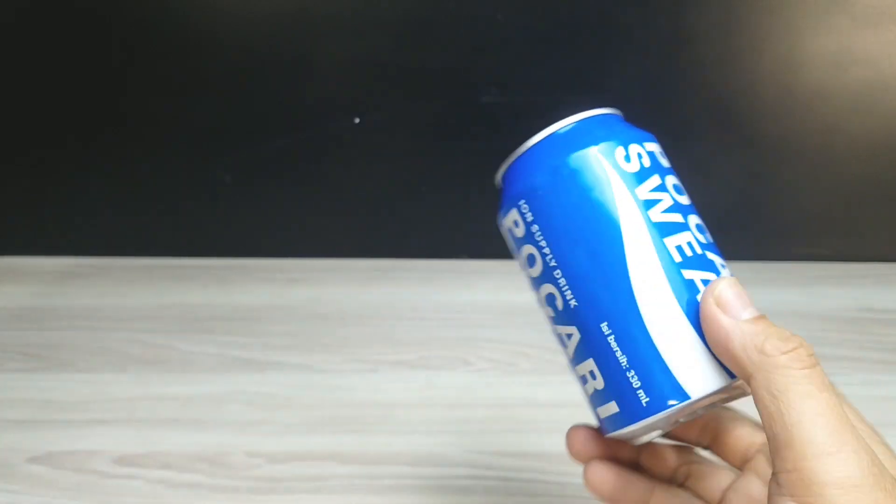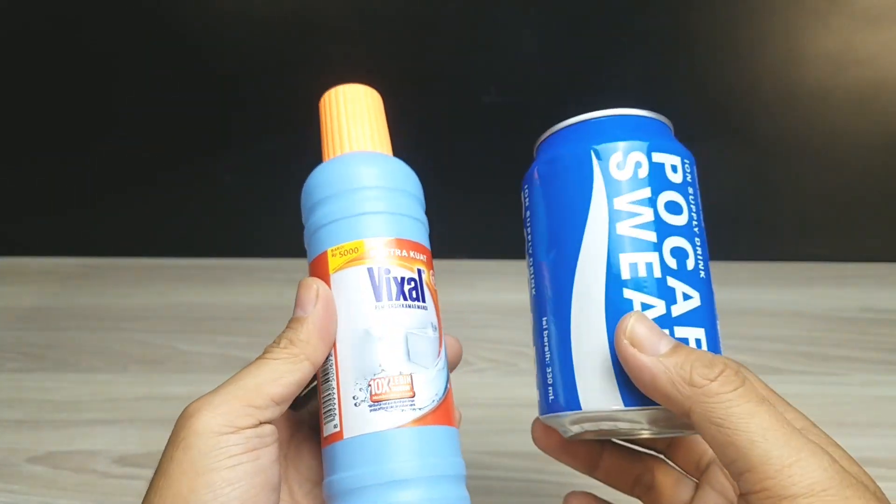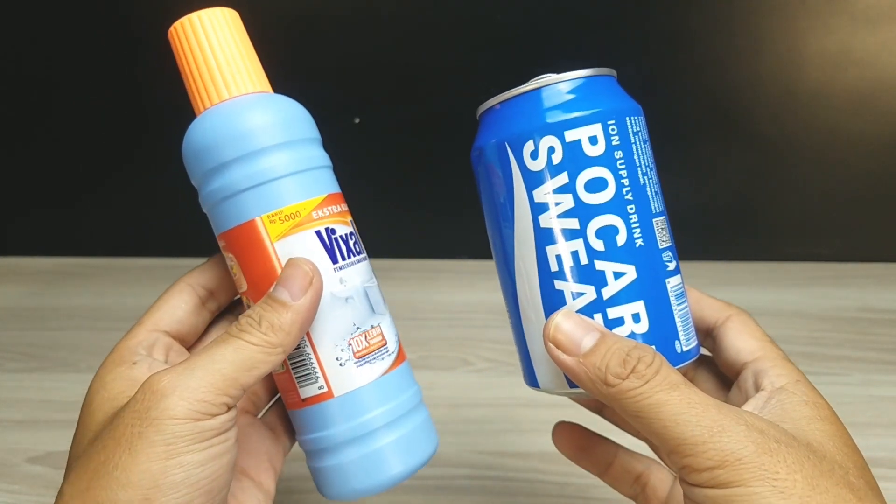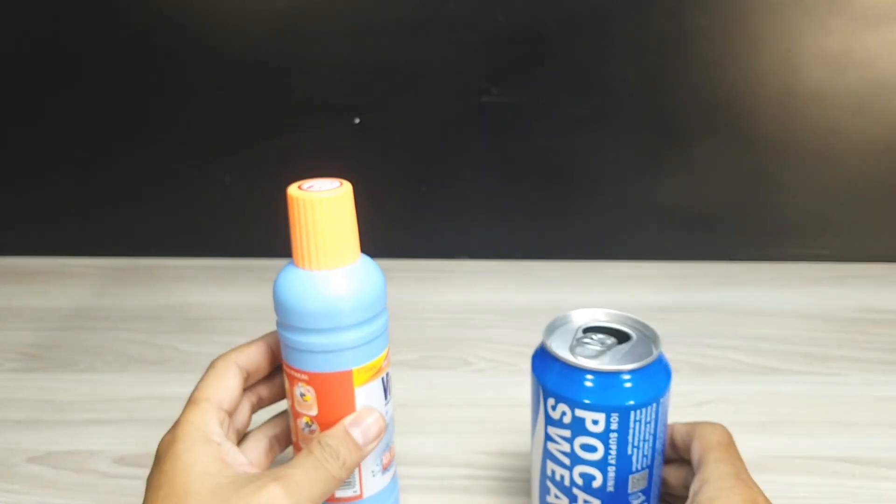Pertama-tama kita siapkan bekas minuman kaleng dan juga pembersih lantai atau pembersih porselen, pembersih kamar mandi. Teman-teman kita akan menggunakan dua bahan ini.